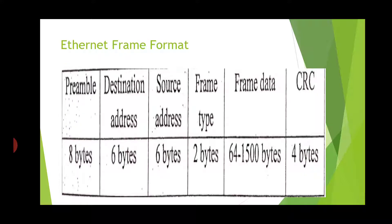Now we will see the Ethernet frame. In total, six fields are present in this frame. The first is the preamble, then destination address, source address, frame type, frame data, and CRC code. The diagram also shows how many bytes are used for each field.